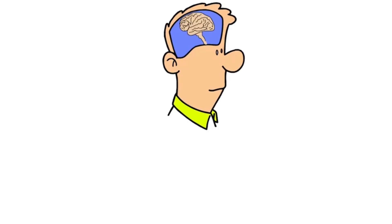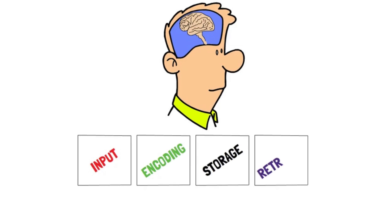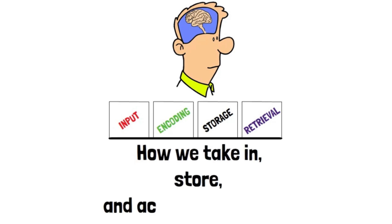The brain processes information in a sequence that involves several key stages: input, encoding, storage, and retrieval. Each of these steps plays a crucial role in how we take in, store, and access information.